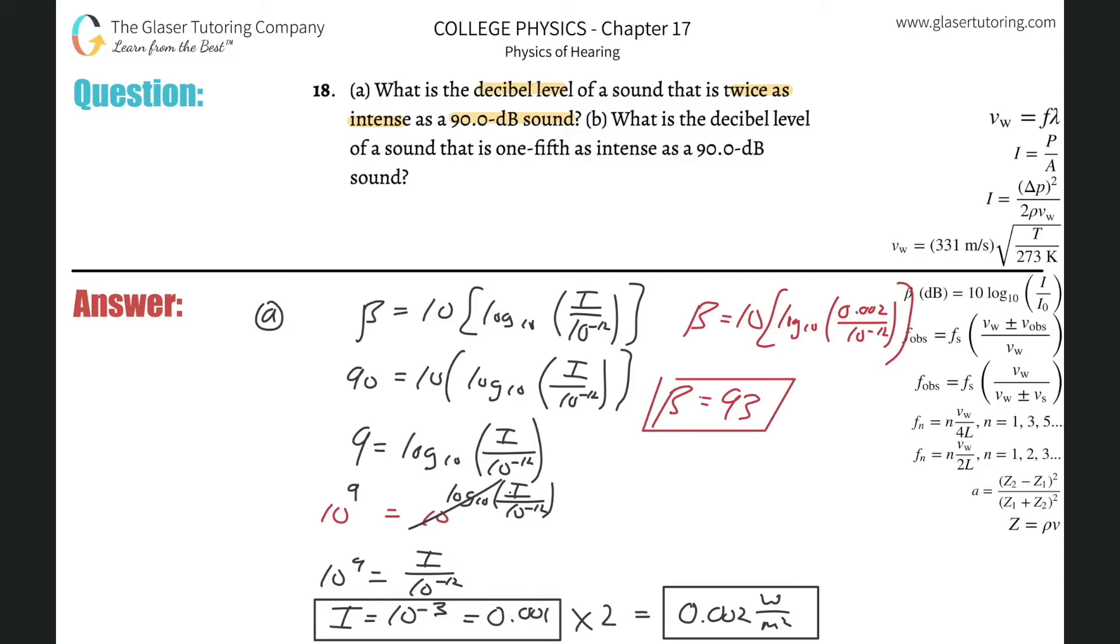What do we have to do now for letter B? What decibel level of sound that is one-fifth as intense of the 90? So basically now I'm just going to pick it up. So part B here, I'm going to pick it up from this point because I still need to know the intensity of a 90 decibel sound.